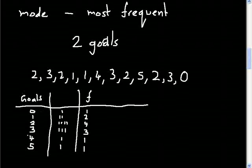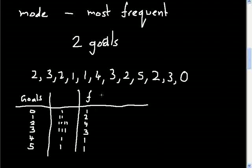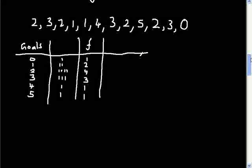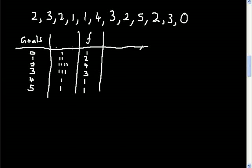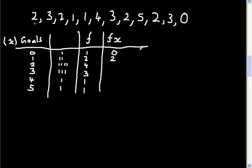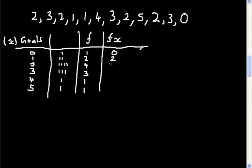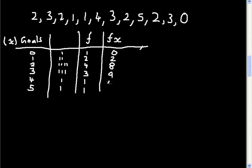You won't be asked to create the table — they'll give you the goals column (x) and the frequency column (f). To find the mean, you create an fx column: multiply each goal value by its frequency. Zero times 1 is 0, one times 2 is 2, two times 4 is 8, and so on for the remaining rows.